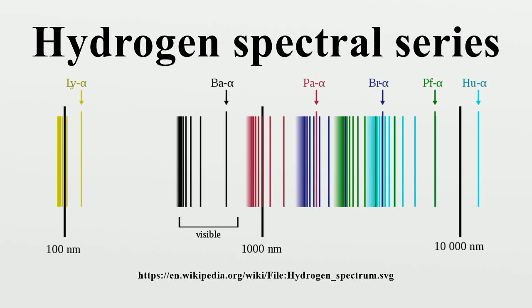The emission spectrum of atomic hydrogen is divided into a number of spectral series, with wavelengths given by the Rydberg formula. These observed spectral lines are due to the electron making transitions between two energy levels in the atom. The classification of the series by the Rydberg formula was important in the development of quantum mechanics. The spectral series are important in astronomical spectroscopy for detecting the presence of hydrogen and calculating redshifts.